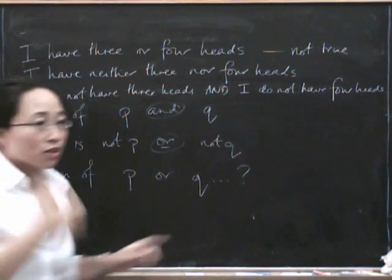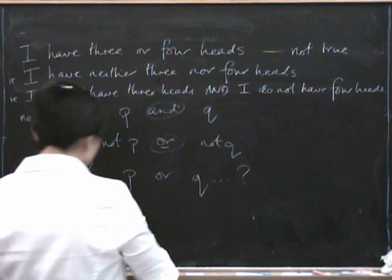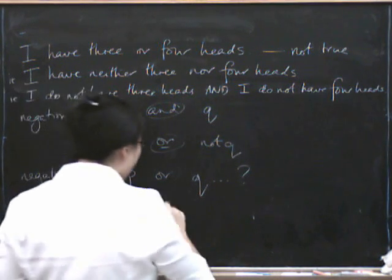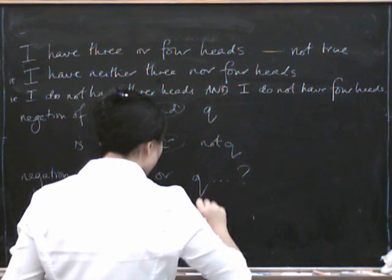So the negation of P or Q, to show it's not true, you have to show that P is not true and also Q is not true.